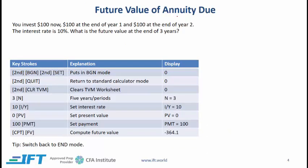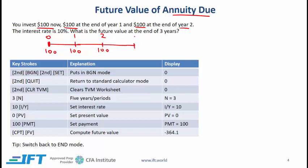Next we look at the future value of an annuity due. With an annuity due, the assumption is that the cash flow happens at the start of each period. You invest $100 now at time 0, then $100 at the end of year 1, and then $100 at the end of year 2. So we have three payments, with the first at the start of the period, and we want the future value at the end of year 3.